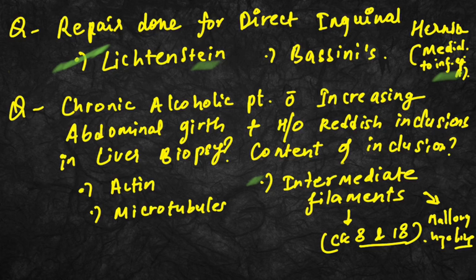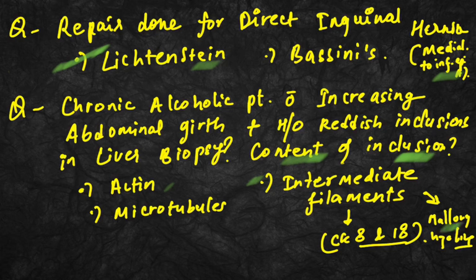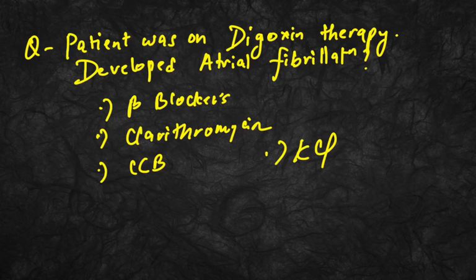A chronic alcoholic patient with increasing abdominal girth and reddish inclusions on liver biopsy: what is the content of those inclusions? The options were actin, microtubules, and intermediate filaments. These reddish inclusions are Mallory hyaline — hyaline filaments composed of intermediate filaments, specifically CK8 and CK18.